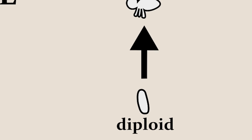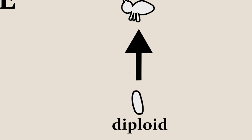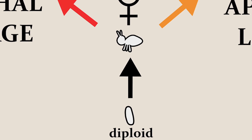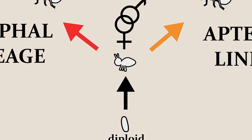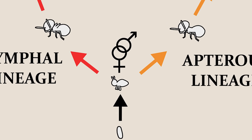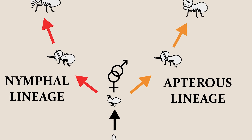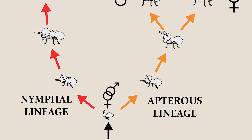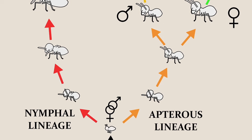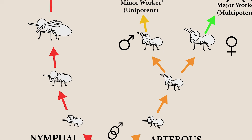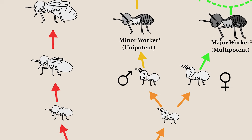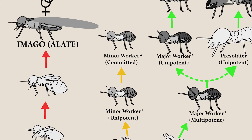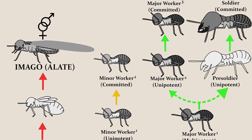Termites do not possess this, and so their caste determination is more traditional, so to speak, and more based on pheromonal cues and life stage, with no individual being 100% locked into any role straight from birth.